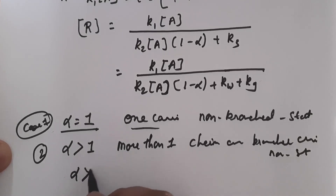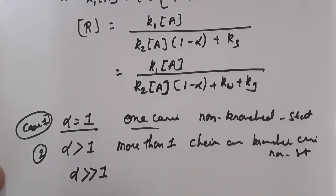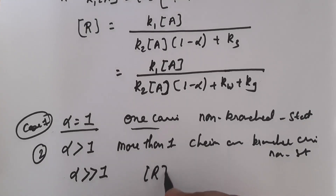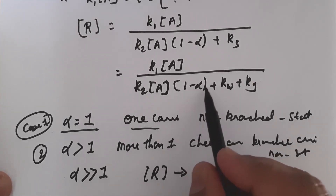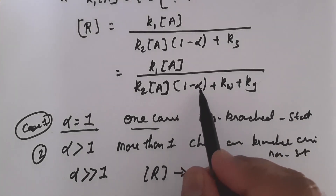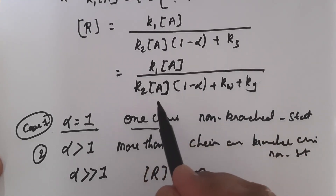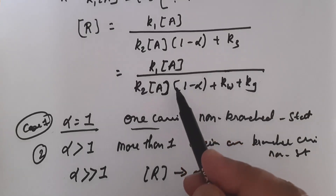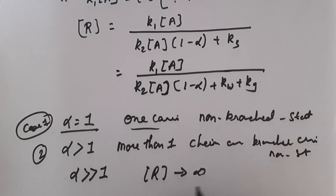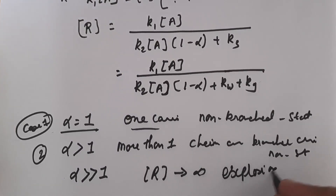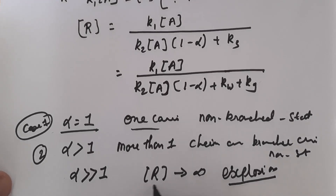When alpha is very much greater than one, a very large number of chain carriers are produced in the propagation sequence. The concentration of R tends to become infinite, because the denominator becomes very large in the negative sense. As R tends to infinity, the rate of reaction becomes almost infinite and as a result explosion takes place.